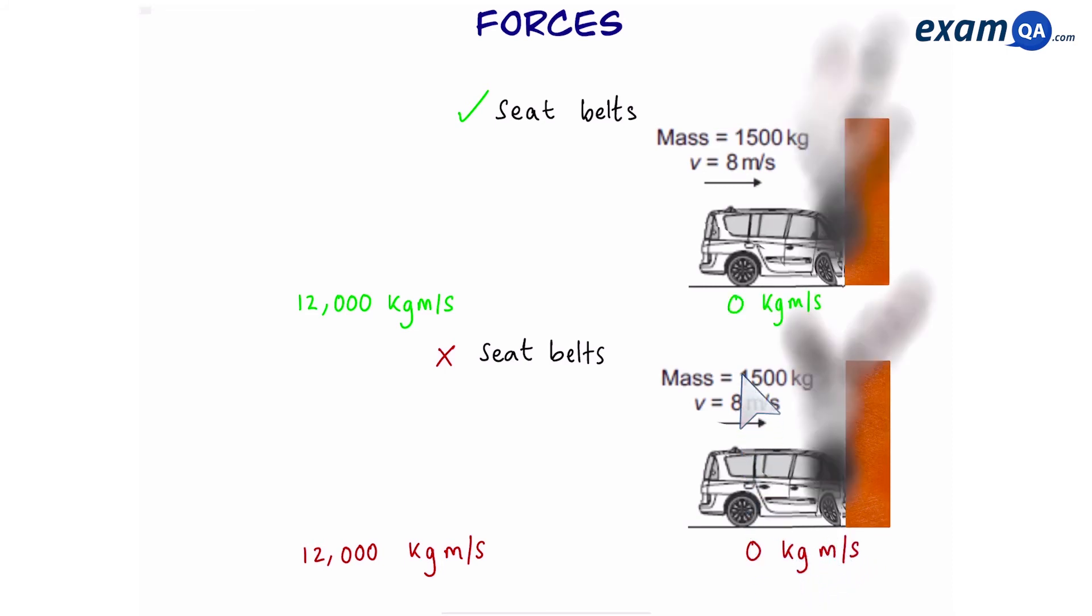Both cars are going to end up crashing against the wall, and we can see that they're both going to stop moving. So in both scenarios, they have the same change in momentum, 12,000 to zero. So you might think, hold on then, what's the point of wearing seatbelts?